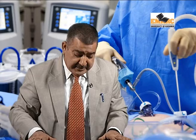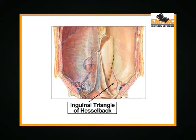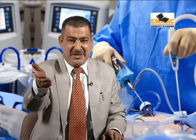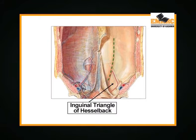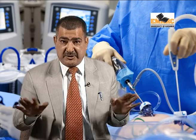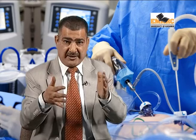Hesselbach's triangle is a triangular area bounded medially by the lateral border of rectus abdominis, laterally by the inferior epigastric artery, and the floor is formed by the inguinal ligament — in laparoscopic view, that is the iliopubic tract. The iliopubic tract is the sister concern of the inguinal ligament: in open repairs you see the inguinal ligament, in laparoscopic repairs you see the iliopubic tract. Hesselbach's triangle, also called the inguinal triangle, is the potential weak area where direct hernia always develops.